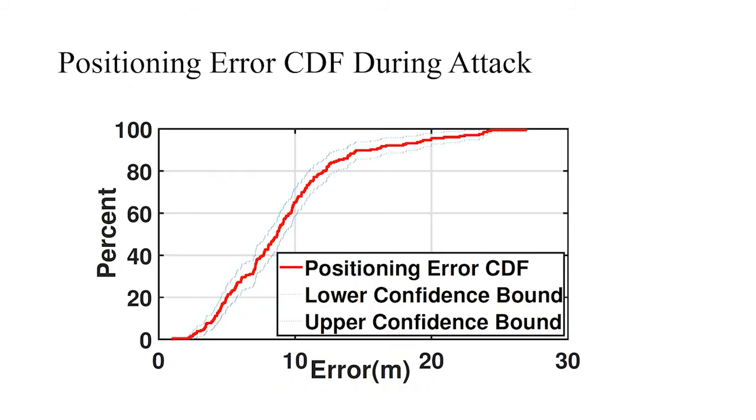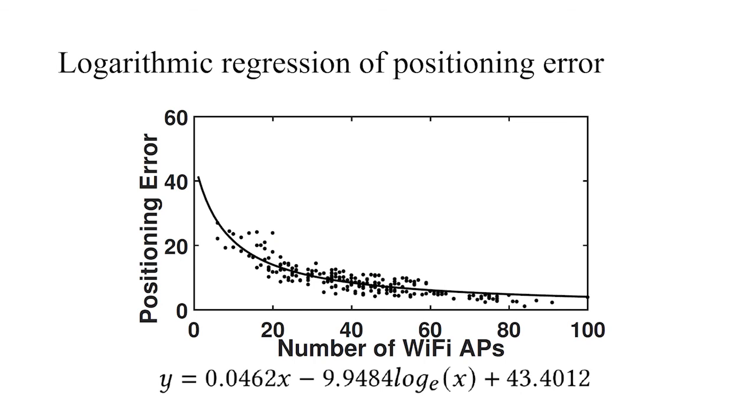Similar to the normal positioning error, the positioning error during the attack also has majority of the error below 15 meters, but with more outliers as we can see from this figure. We actually observed a log regression of position error compared to the number of WiFis. That means more WiFi APs cause less position error, and we can see a regression shown here.